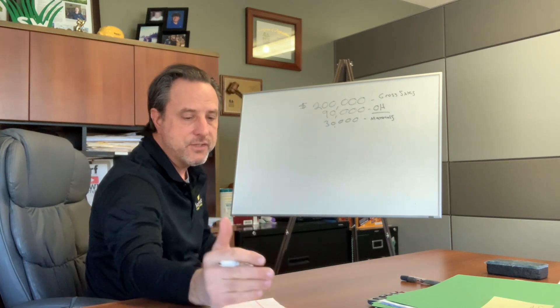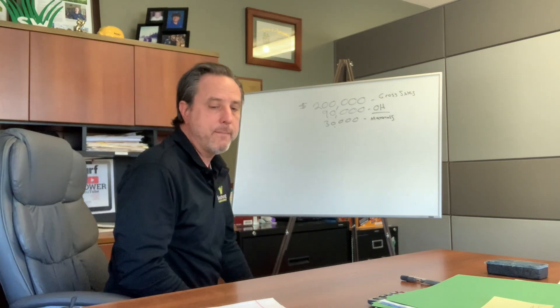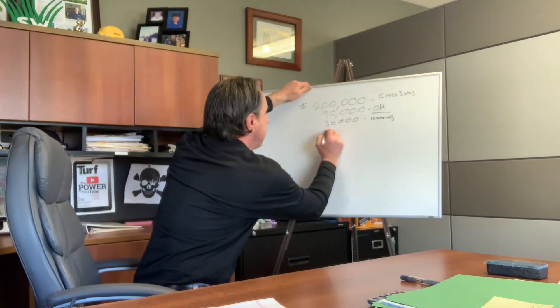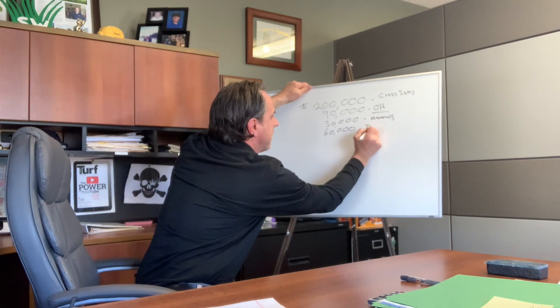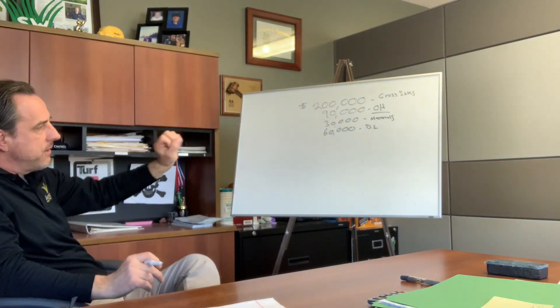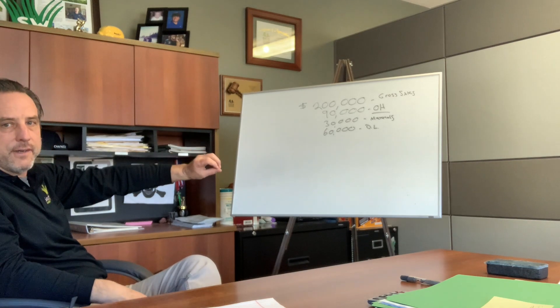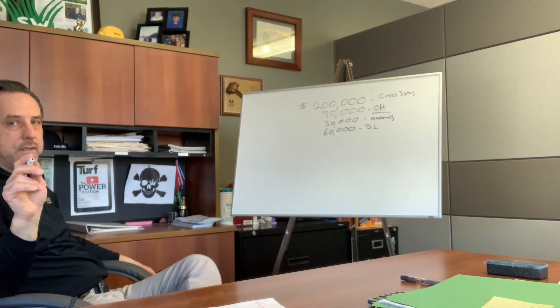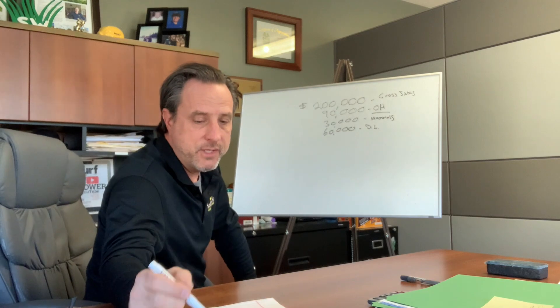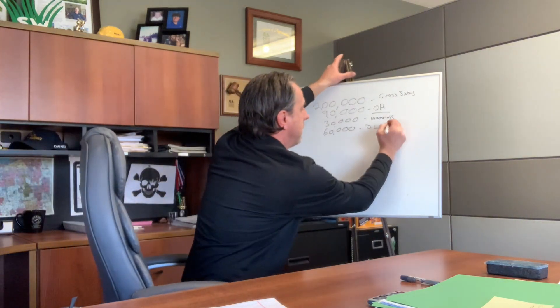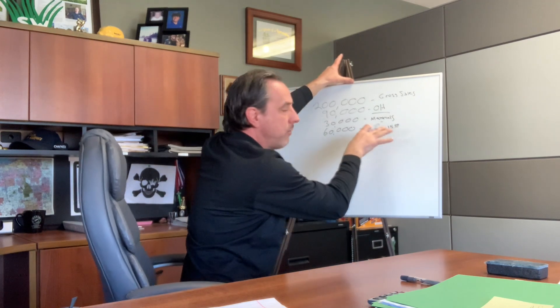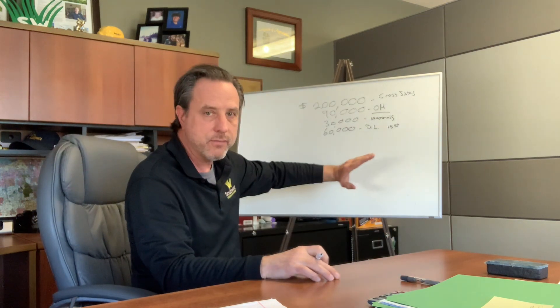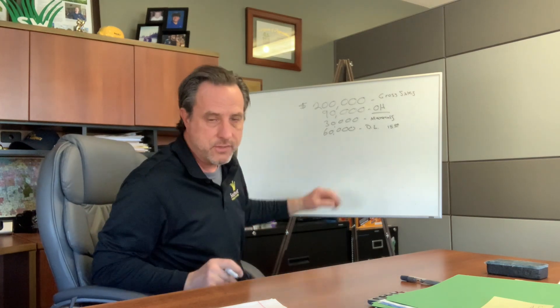The next number is direct labor costs, which is basically payroll. For a company this size, you're looking at about 30% labor cost — $60,000. That's your direct labor. You need your overhead, your materials, and your direct labor so you can figure out your per hour rate. In this company we're using $15 an hour for the average employee as our blended rate — if you're paying some people $20 and some $10, add them up and divide by the number of people to get the blended rate.